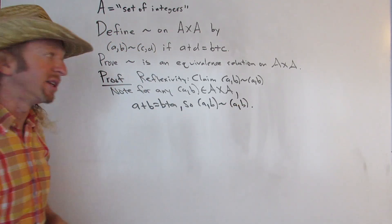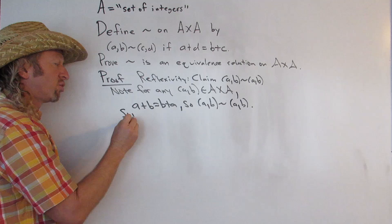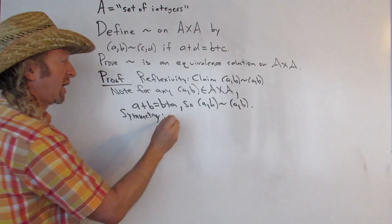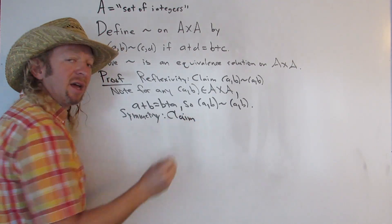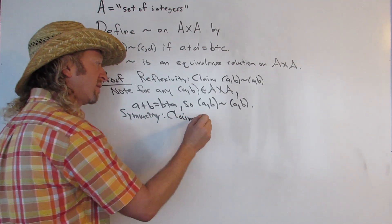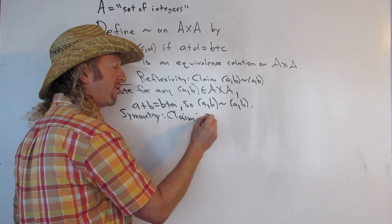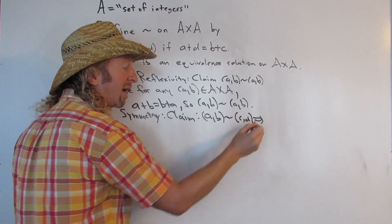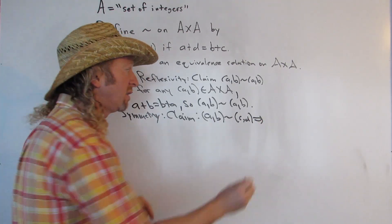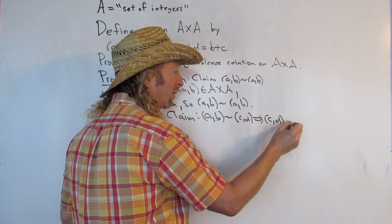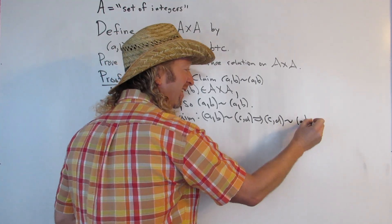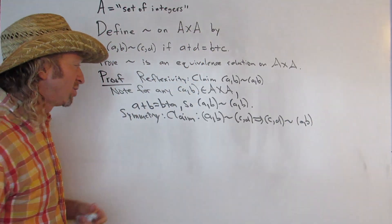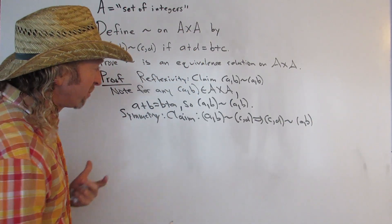That shows reflexivity. Let's do symmetry now. Symmetry says the claim is that if AB twiddle CD, this should imply that CD twiddle AB. So if AB is related to CD, then CD is related to AB — that's what symmetry is. Let's see if we can prove that.